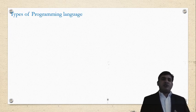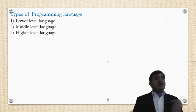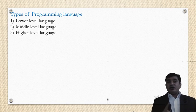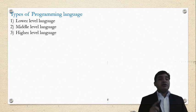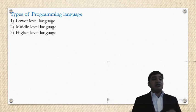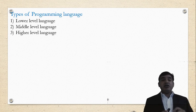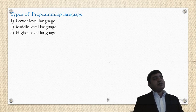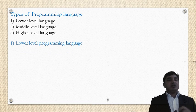Now we have to see the types of a programming language. There are three types of programming language. First is lower level programming language. Second is middle level programming language. And third is higher level programming language.